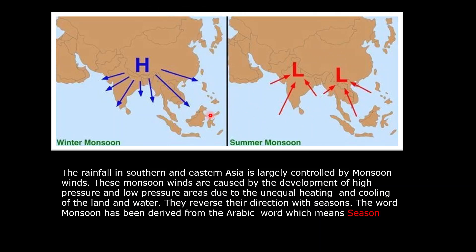In the south, the rainfall which occurs especially in southern and eastern Asia is largely controlled by the monsoon winds. These monsoon winds are caused by the development of high pressure and low pressure due to unequal heating and cooling of the land and water. During the summers, temperatures on the land become very high, so an intense low pressure develops in the southern and eastern part of Asia.